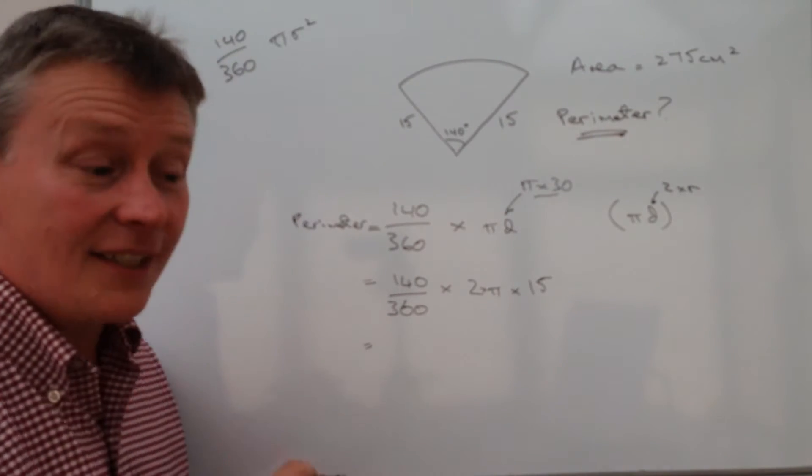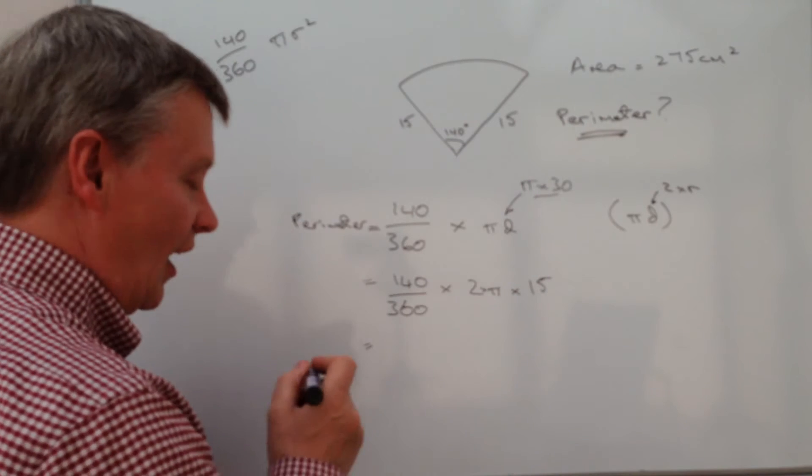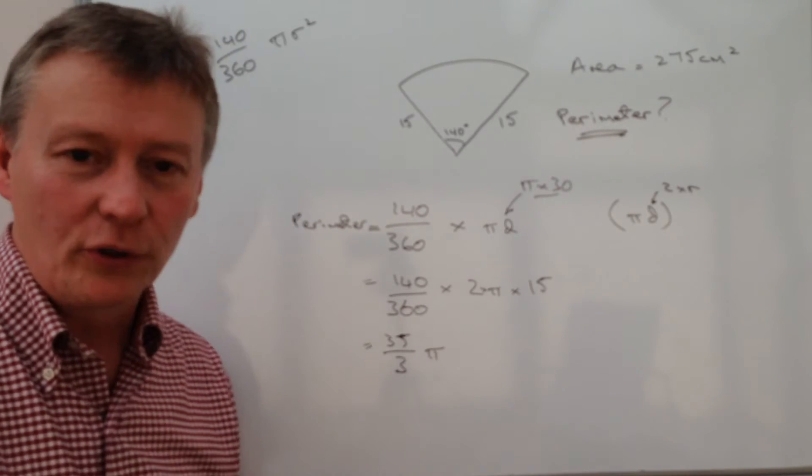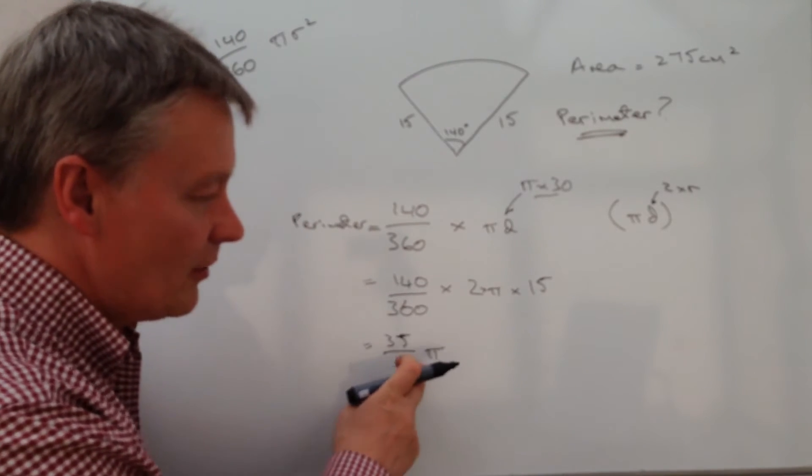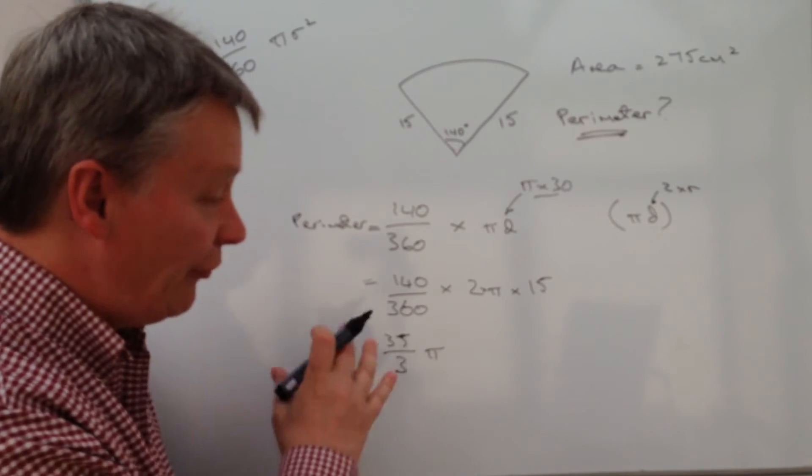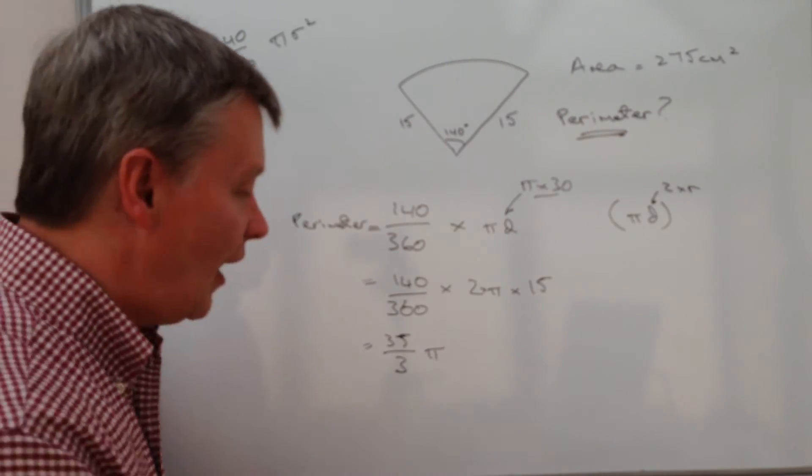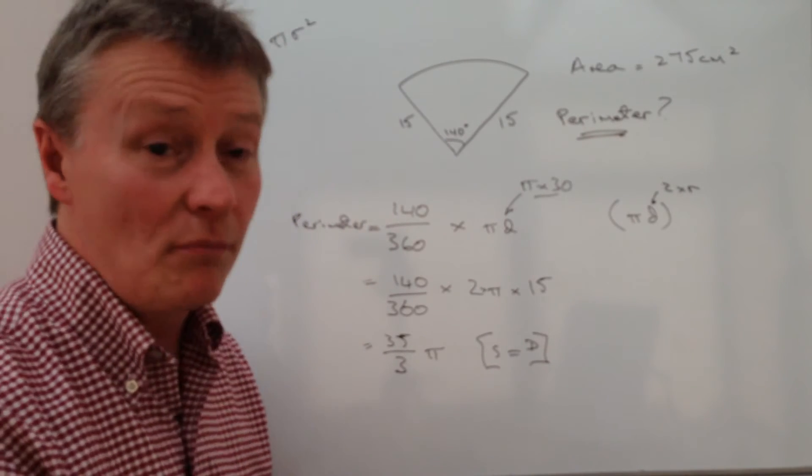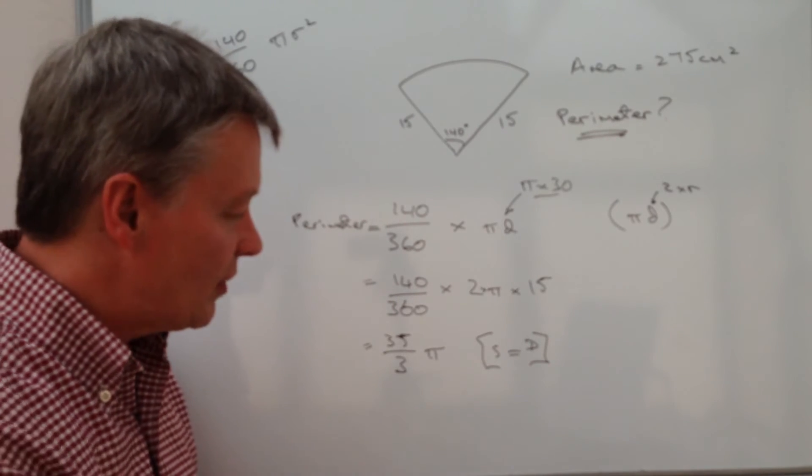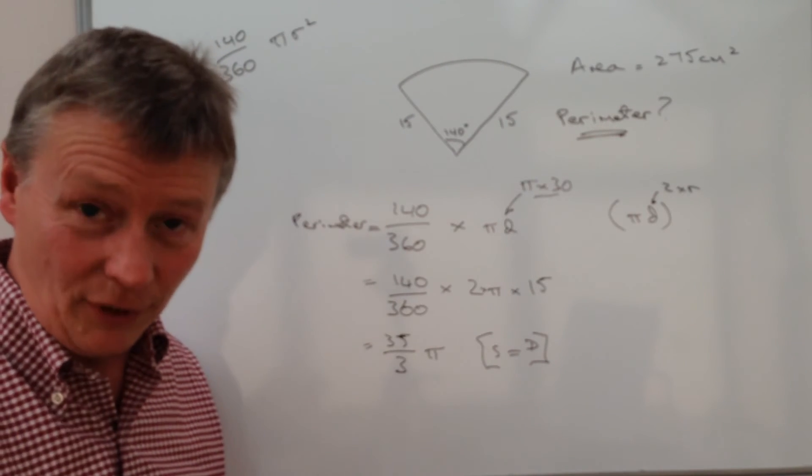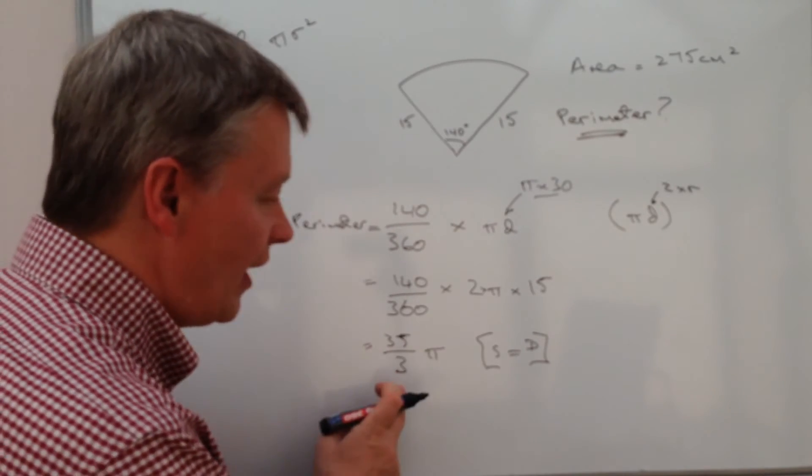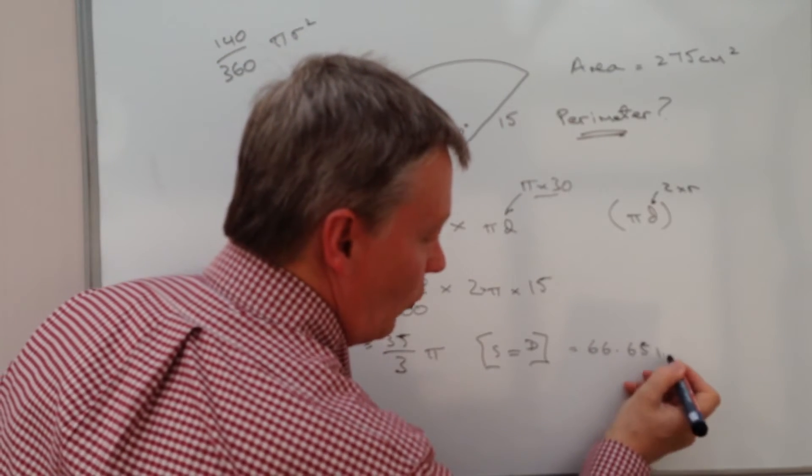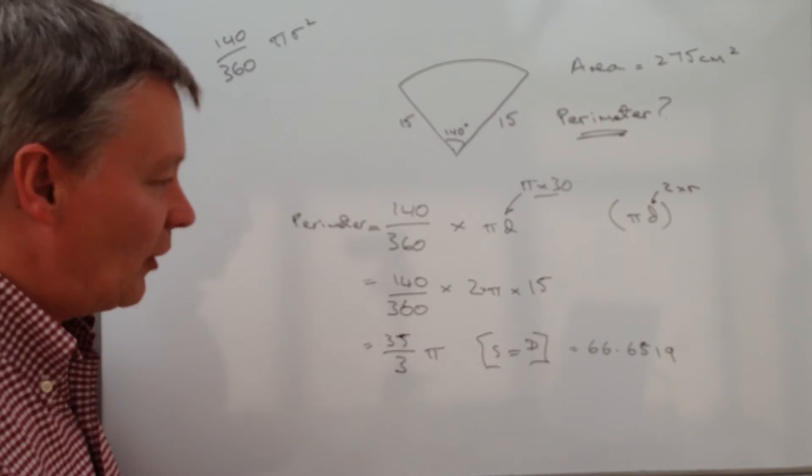So once I put those numbers into my calculator, I should get something like this. So I'll get 35 over 3 π. And that's because the calculator knows that π is fixed, and therefore it will give a fraction of π. If you then press a key which is SD - now that's on my particular calculator, it might be slightly different on yours - but if you press that key, it will give you the decimal equivalent. And the decimal equivalent of this is going to be 66.6519. No, it's not. I got that wrong.